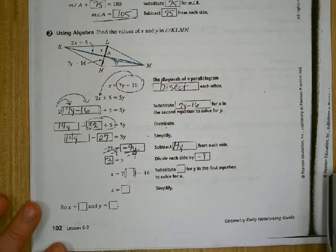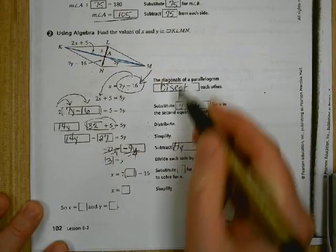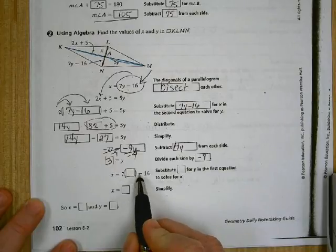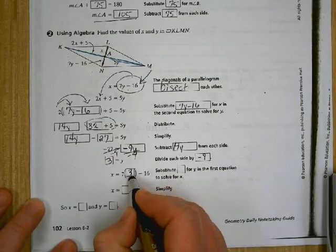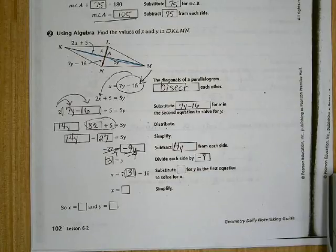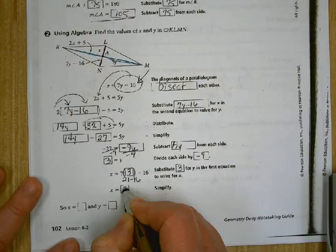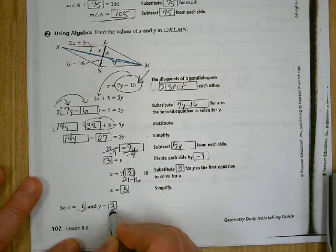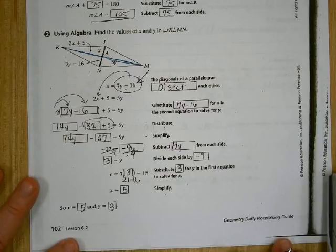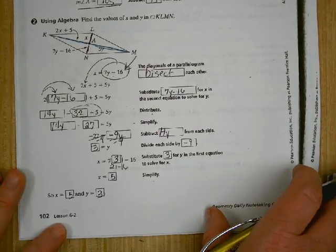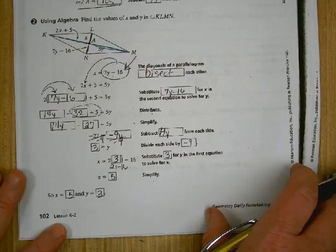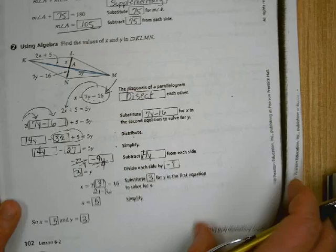Okay, so I figured out that Y is 3. I still have to figure out what X is. So you're going to go right back up here. X is 7 times Y minus 16, and I just figured out that Y is 3. So what is 7 times 3? 21 minus 16 is 5. So X is 5, and Y is 3. Do you have questions on that problem? Everybody got it?